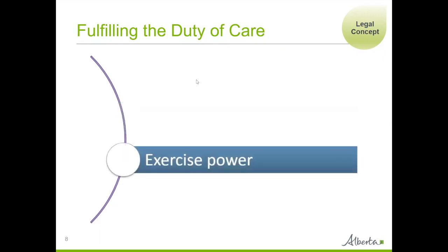The next way of fulfilling the duty of care is exercising power. Board members must make decisions and are ultimately responsible for the organization and for furthering the organization's goals and objectives. When board members are elected, they are given the authority and responsibility to make decisions and move the organization towards its goals. Examples of exercising power include developing standards for measuring the performance of staff and doing annual performance reviews, and ensuring that the funds received by the organization are used for their intended purpose and for the organization's goals and objectives.